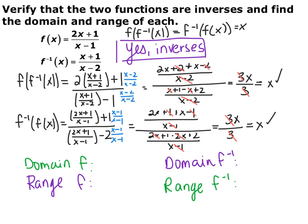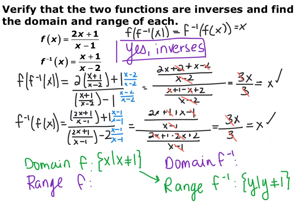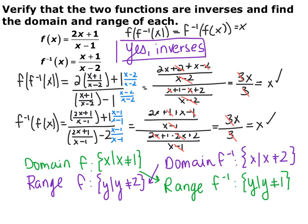Now find the domain and range of each. Find the domain of each function, and because of how inverses work, their ranges are just the opposite domains. For f, it's a rational function so x cannot equal 1 — that's the domain of f, which becomes the range of f⁻¹, meaning y cannot equal 1. For f⁻¹, x cannot equal 2 — that's the domain of f⁻¹, which becomes the range of f, meaning y cannot equal 2. Find the domains and then just switch them for the ranges.